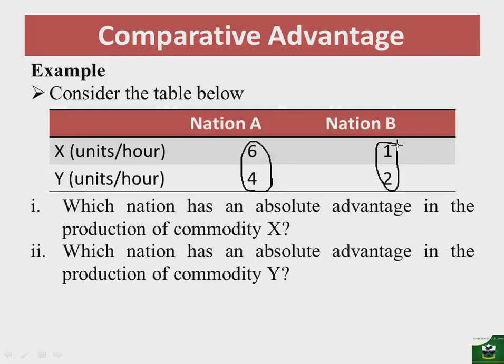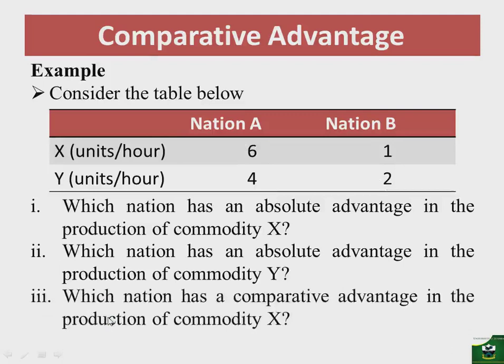Let's analyze by seeing which country has a comparative advantage. Starting with the first commodity: which nation has a comparative advantage in the production of commodity X? In answering this, you need to look at the units produced in each nation. We start with commodity X. In one hour, nation A is producing six units of X, and in one hour nation B is producing one unit of X.